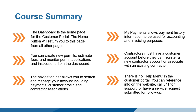We also covered the navigation bar and touched on the contractor association function. In summary, the customer dashboard is the main page for the customer portal. The Home button will bring you back to this page from any other pages in the system. You can create new permits and estimate fees, access the navigation bar, and open the permit tabs from the dashboard.